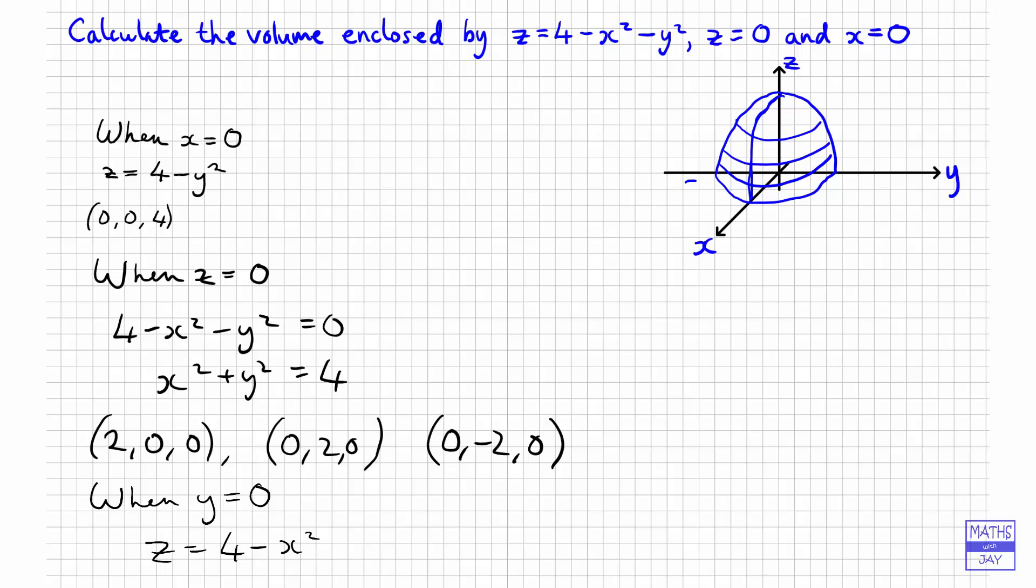So the important thing really is to think about the points where these cross the axes. So on the z axis, that will be going up to 4. Because we've got x squared plus y squared is 4 on the xy plane, that's going to be coming out as far as 2, going out as far as negative 2 on the y.